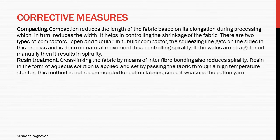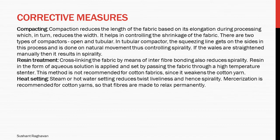Resin treatment: cross-linking the fabric by means of inter-fiber bonding also reduces spirality. Resin in the form of aqueous solution is applied and set by passing the fabric through a high-temperature stenter. This method is not recommended for cotton fabrics since it weakens the cotton yarn. Heat setting: steam or hot water setting reduces twist liveness and hence spirality. Mercerization is recommended for cotton yarns so that fabrics are made to relax permanently.